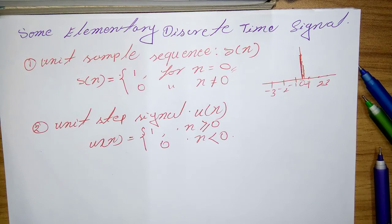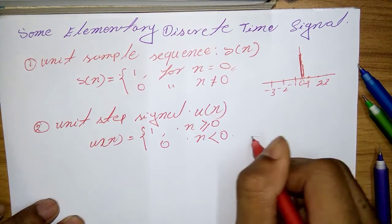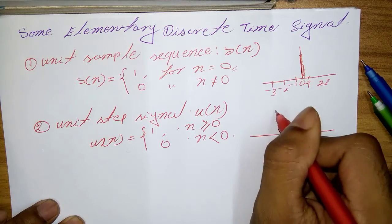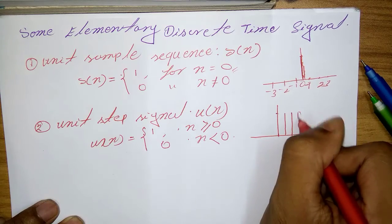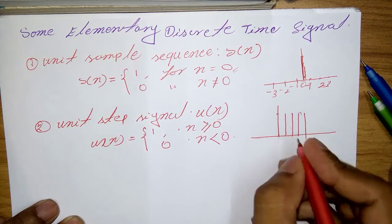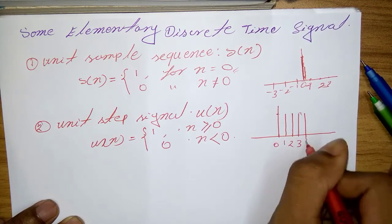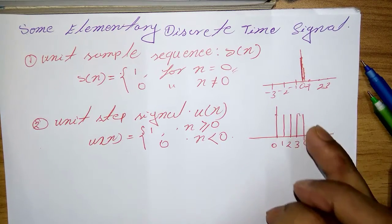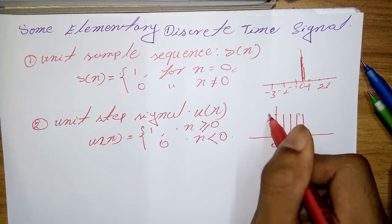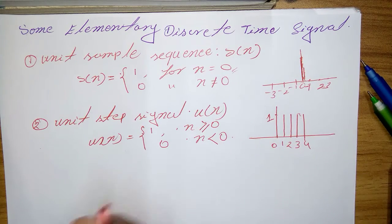So in that case, the graphical representation is something like that: 0, 1, 2, 3, 4. It's unity step, the step of unit.